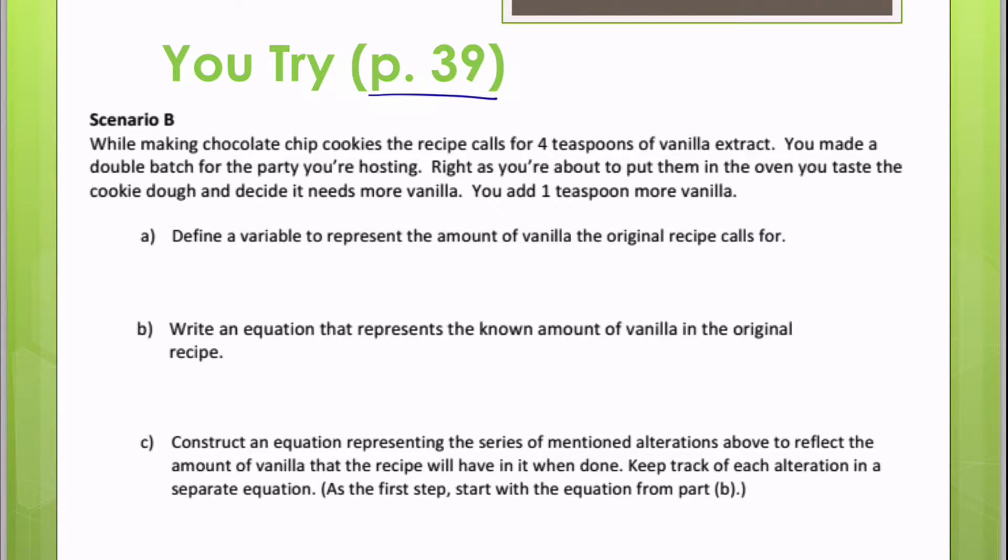For A, we are going to define a variable to represent the amount of vanilla the original recipe calls for. I'm going to use V just because that feels good. It's vanilla there. But again, you can use any variable that you would like. So V represents the amount of vanilla in the original recipe.